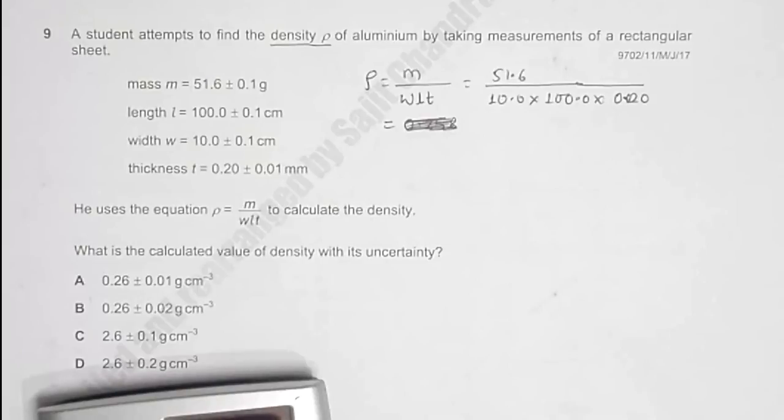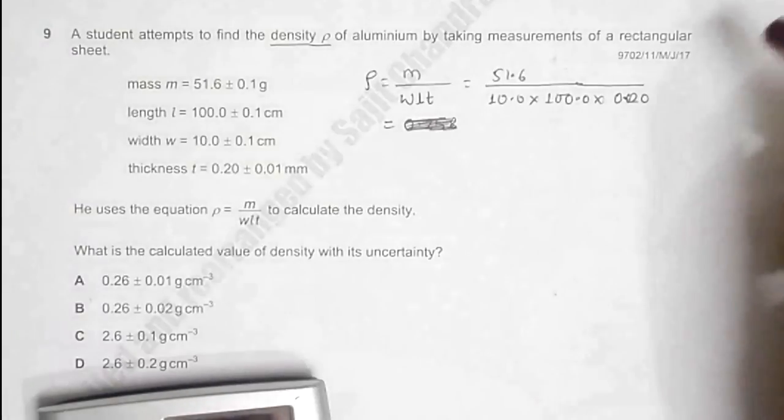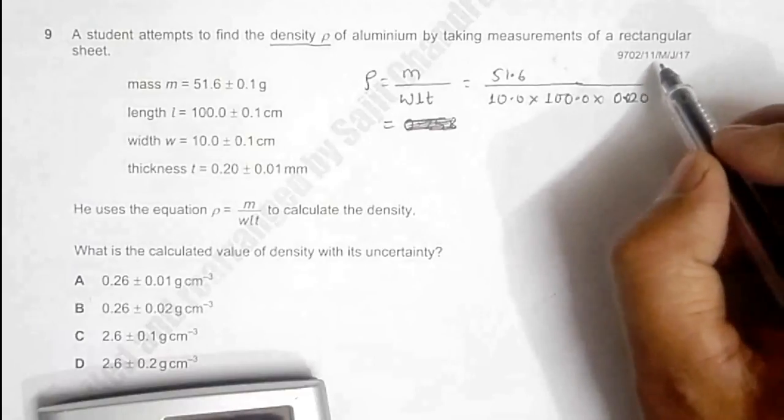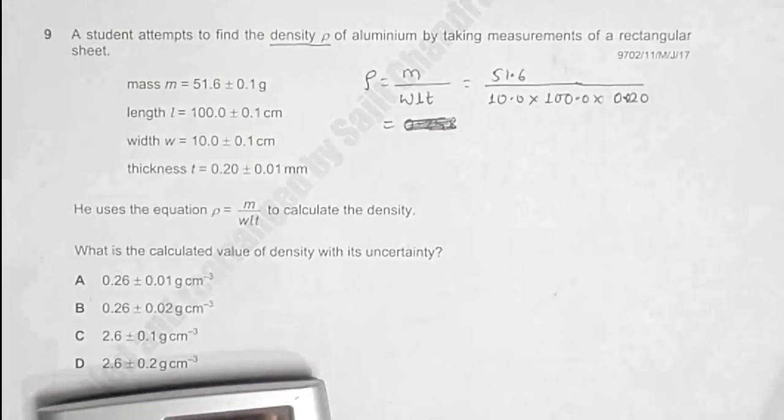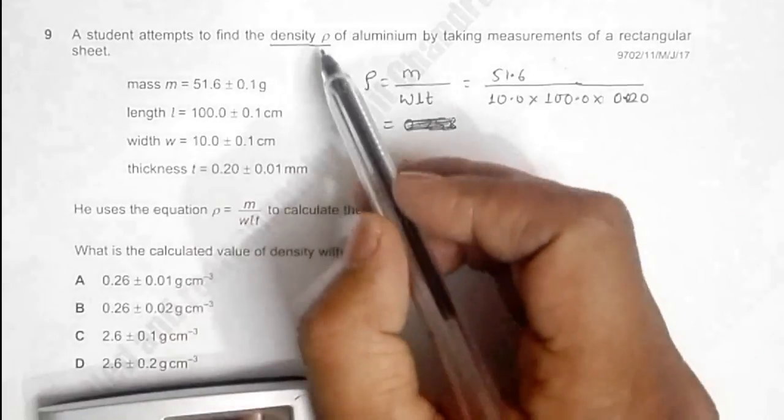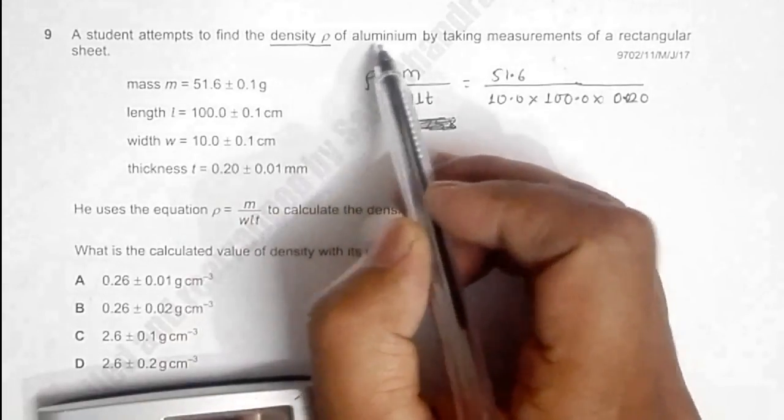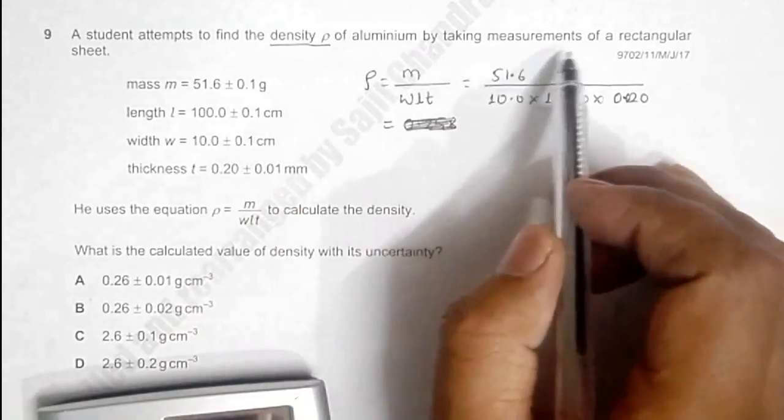This is question 9 from the 2017 May/June paper 1-1. In this question we have to find the density ρ of aluminum by taking measurements of a rectangular sheet.